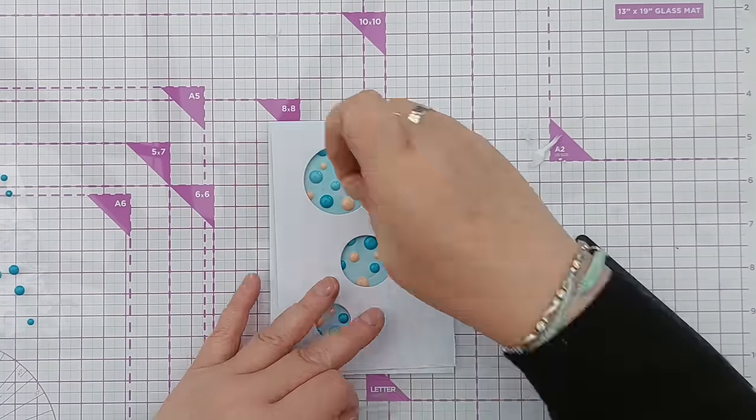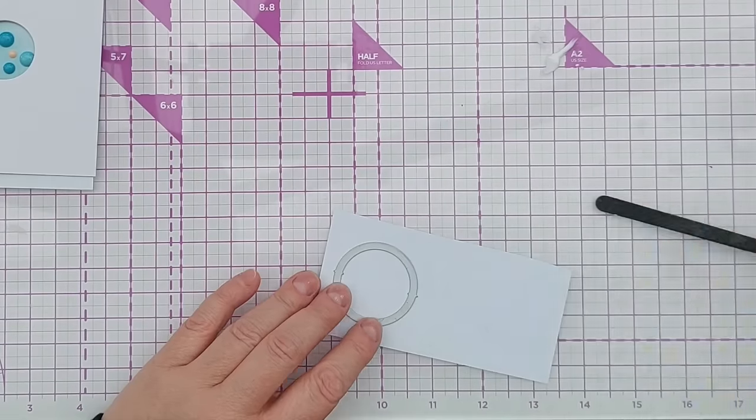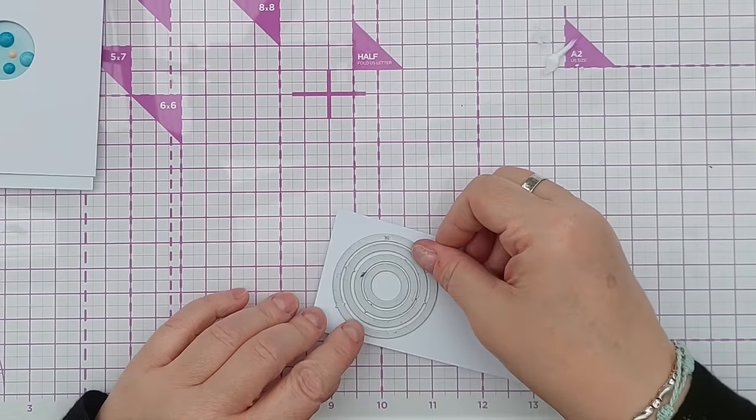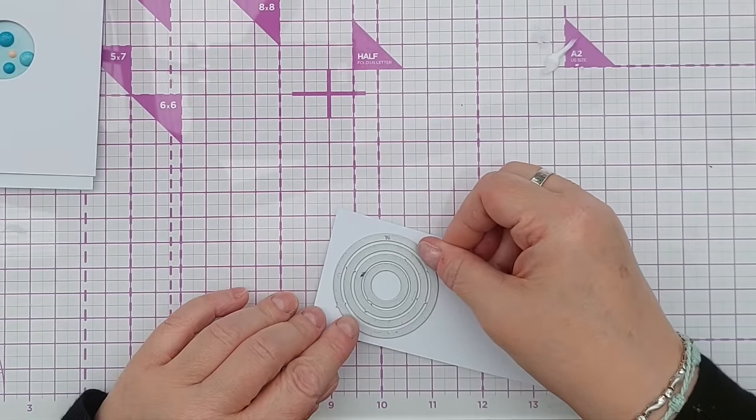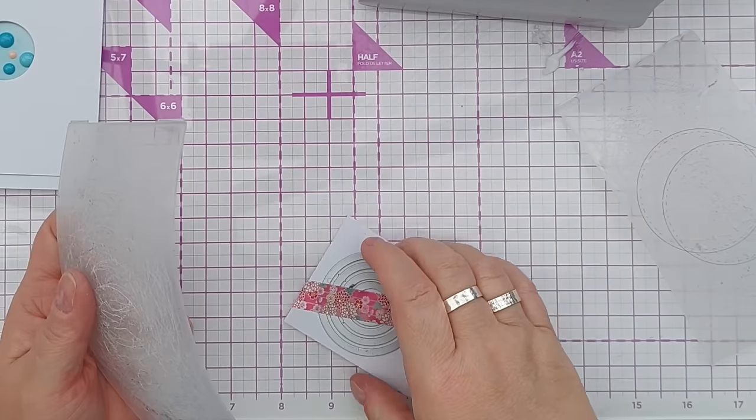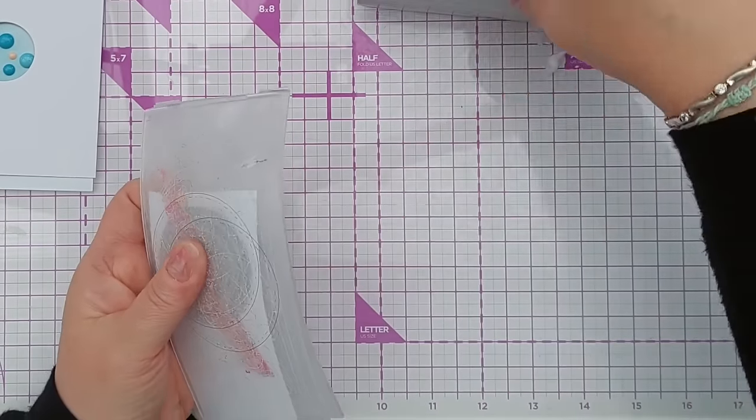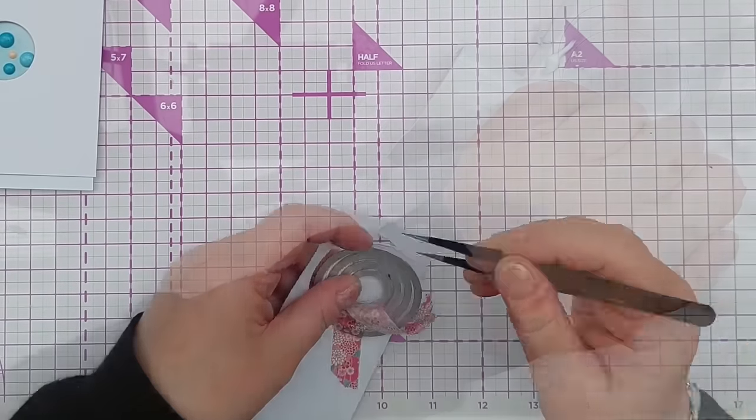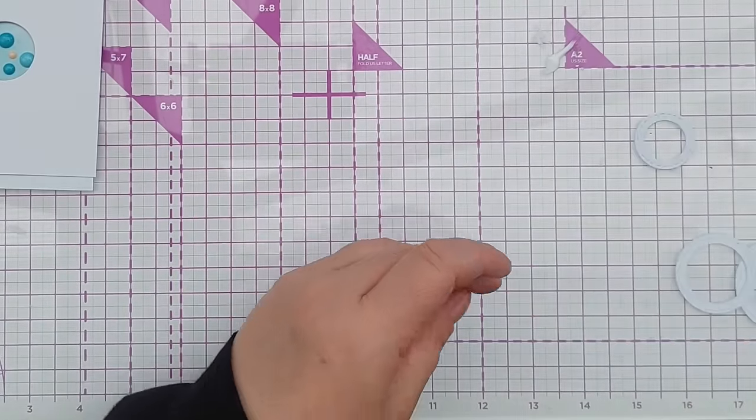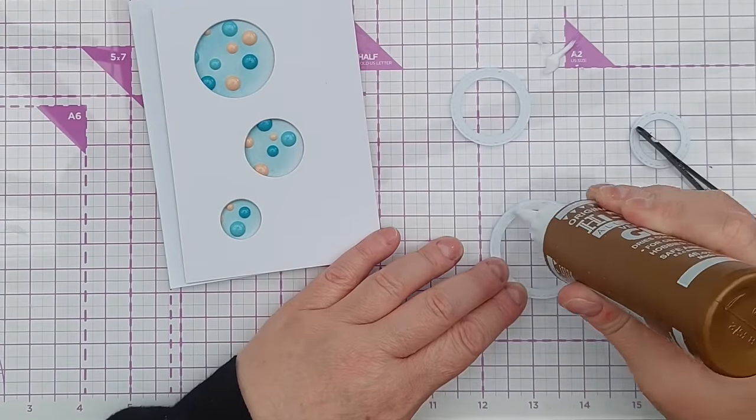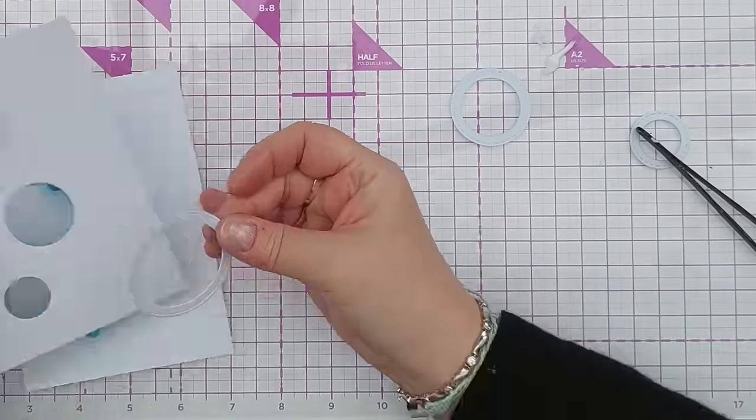Before adding my panel onto my card blank, I decided I wanted to give the apertures some frames. So I took the circle dies, laid them one inside the other, and ran that through my die cutting machine with smooth white cardstock. That cut out some frames which I then added to the panel using high tack glue, giving the front panel a more finished, polished look.